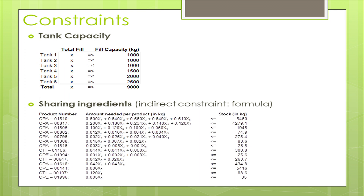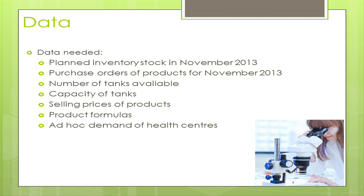Other constraints include tank capacity — we have six different tanks, each with a certain fill capacity. Additionally, the five products have different ingredients, and some ingredients are shared among them. The data was planned for stock in November 2013 and includes purchase orders, number of tanks available, tank capacities, selling prices, product formulas, and the ad hoc demand from the health center, allowing us to manufacture as much as we can.